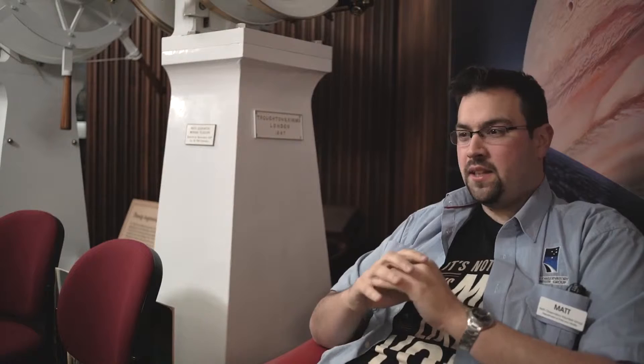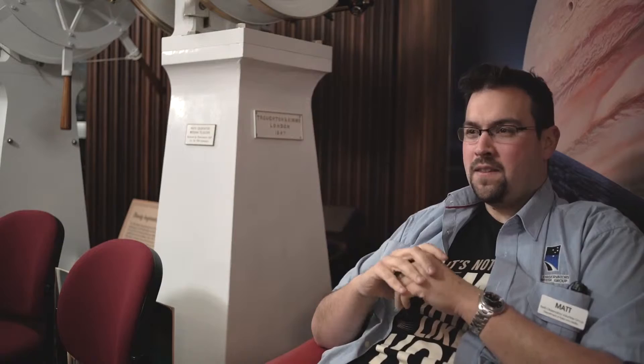So Planet Nine, they believe, they theorize that it orbits about 600 AU, so that's 600 times 150 million kilometers, and that's how far it is out at the moment. They think the orbit is around about 20,000 years, so this is an incredibly far object.